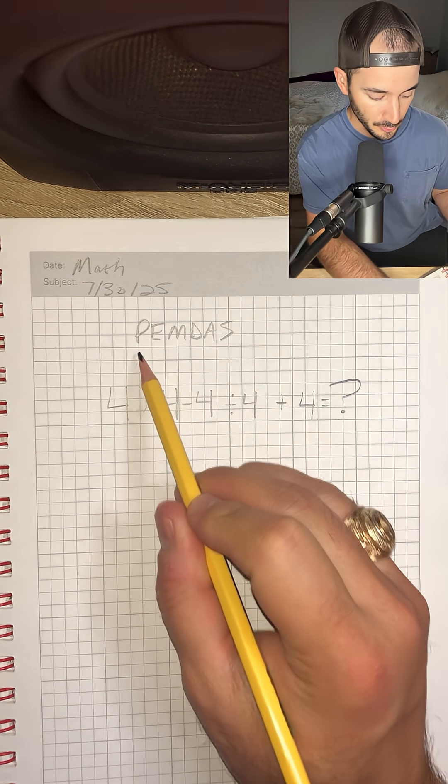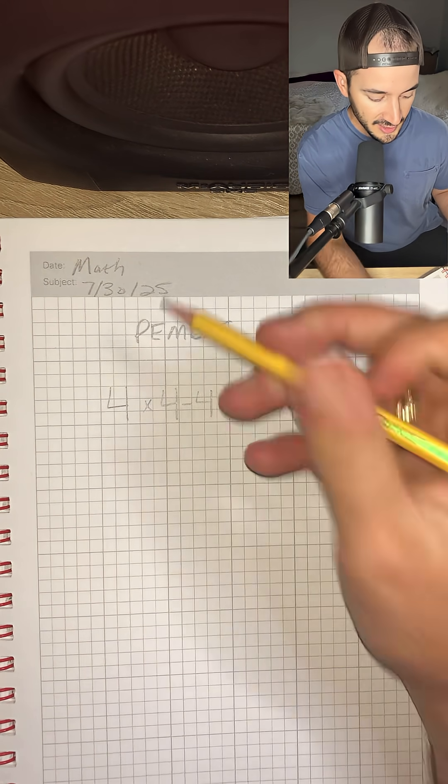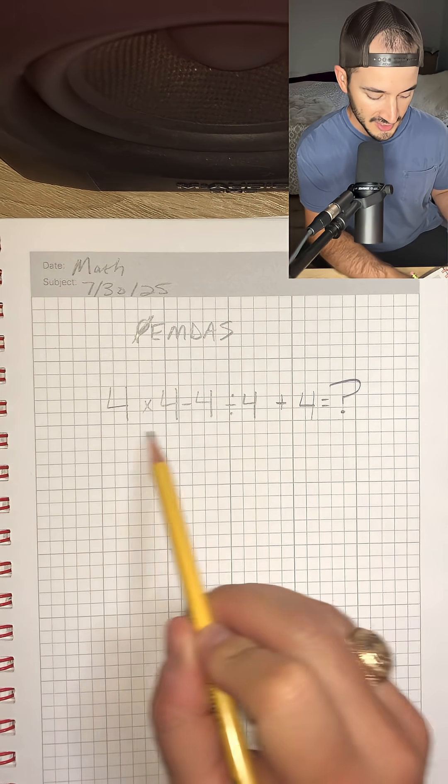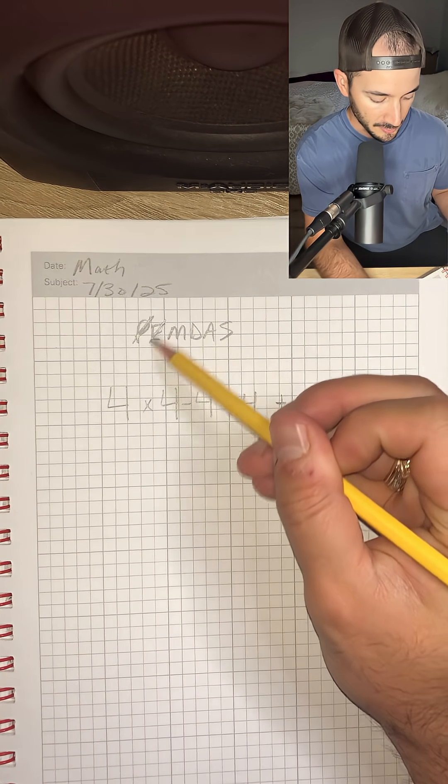The first thing we're looking for is parentheses. I don't see any, so we're going to mark that out. The next thing we look for is exponents. Once again, I don't see any, so we're going to mark that out.